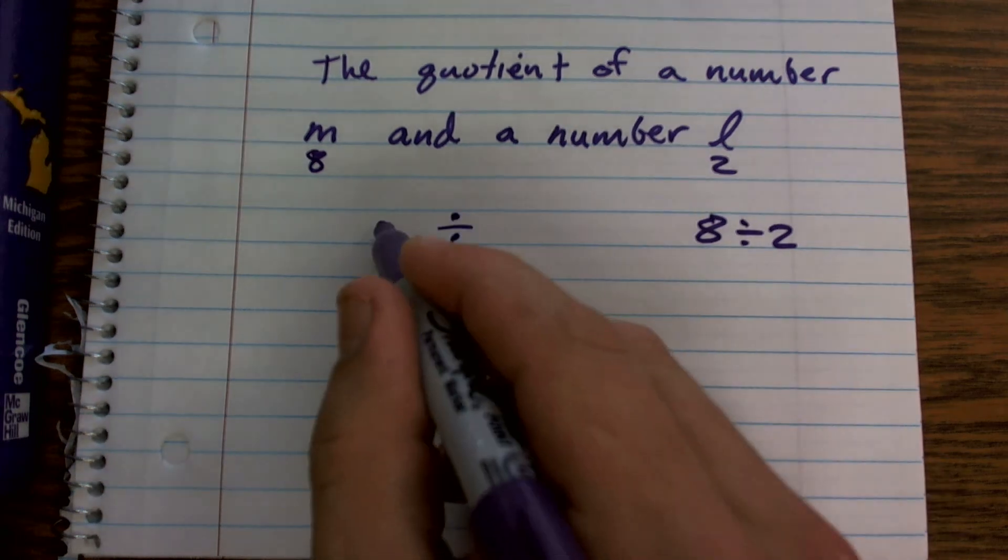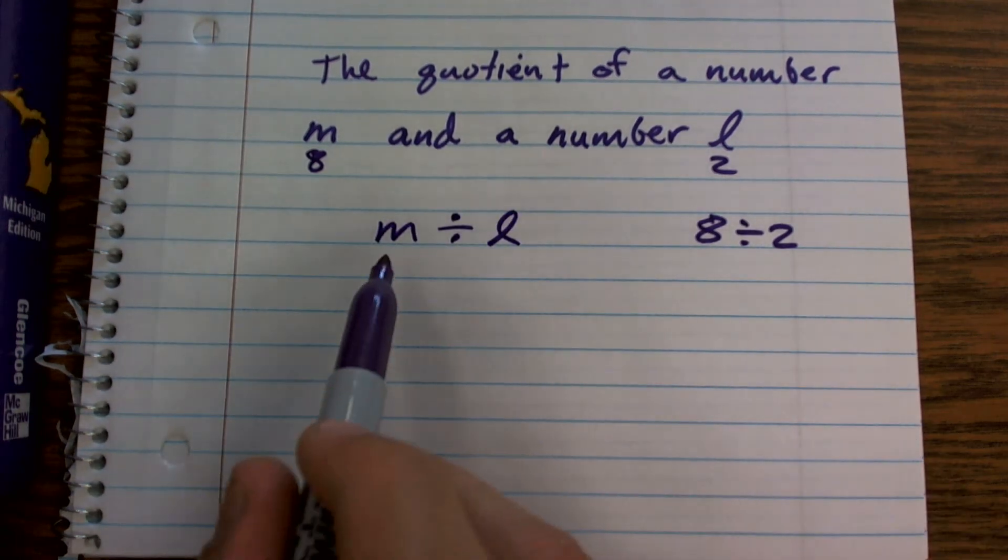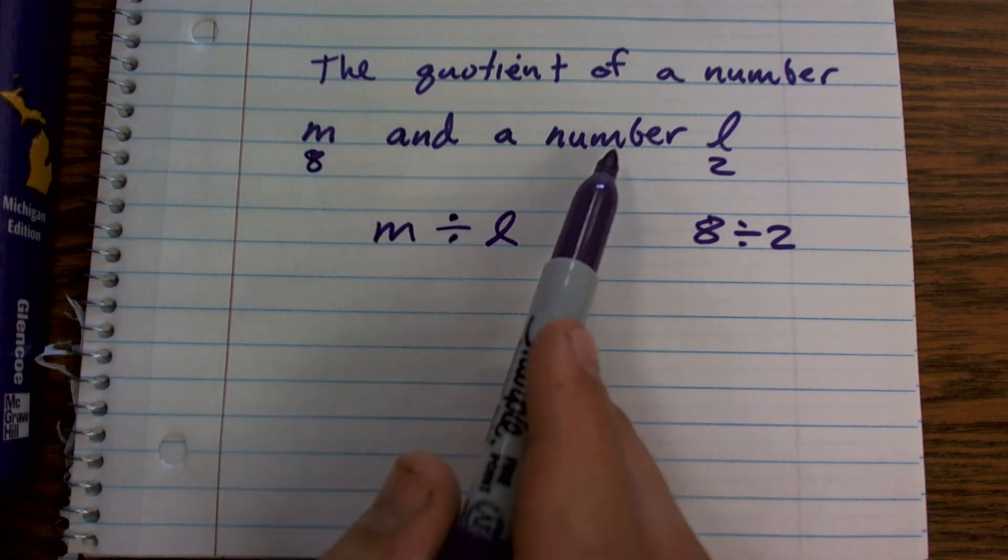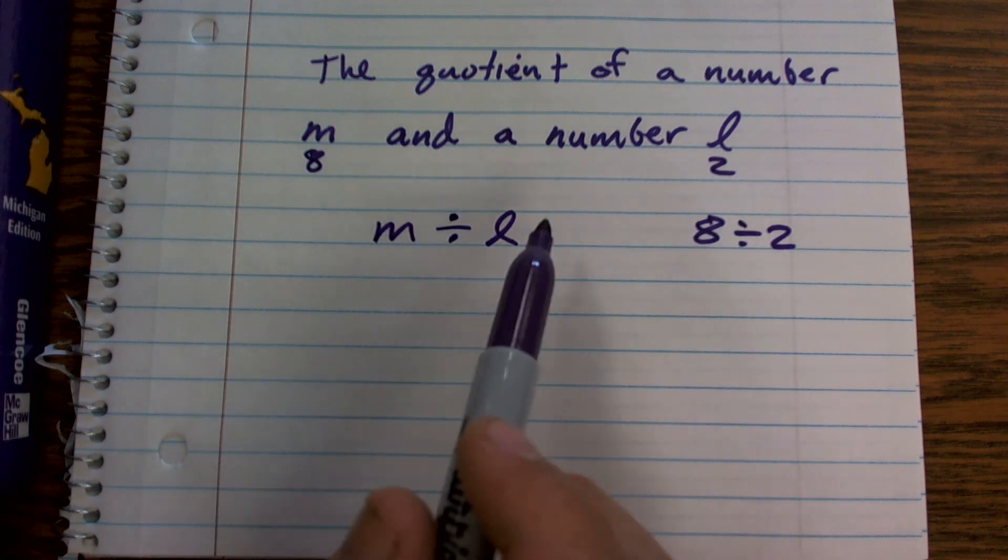So in this case, even without any numbers, we are just going to write the quotient of a number M and the number L is M divided by L.